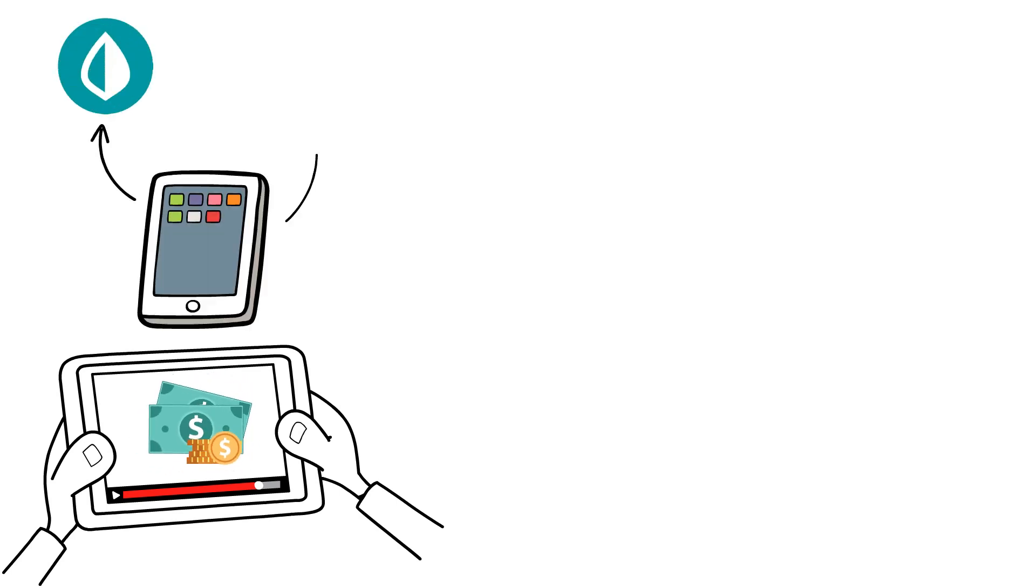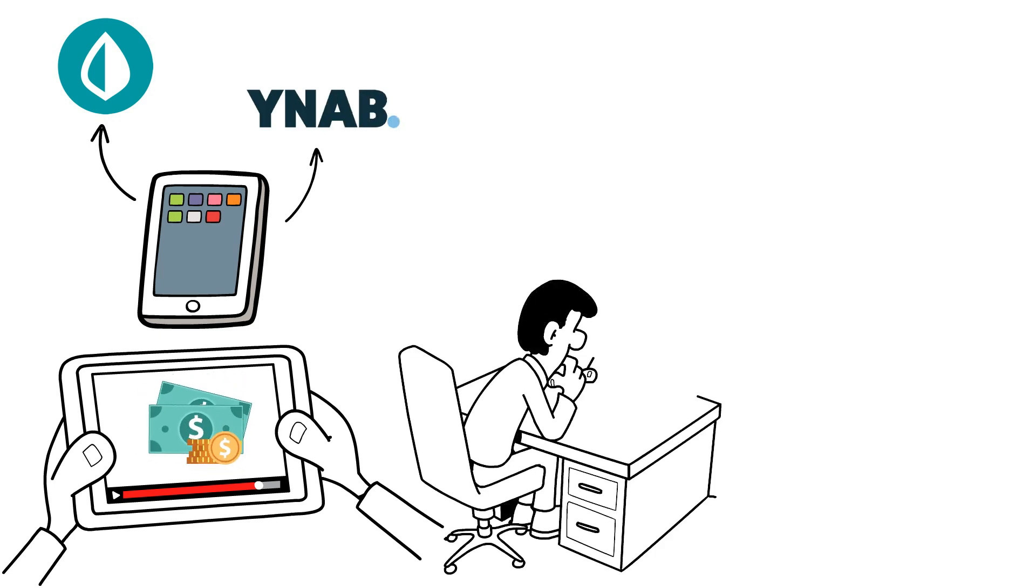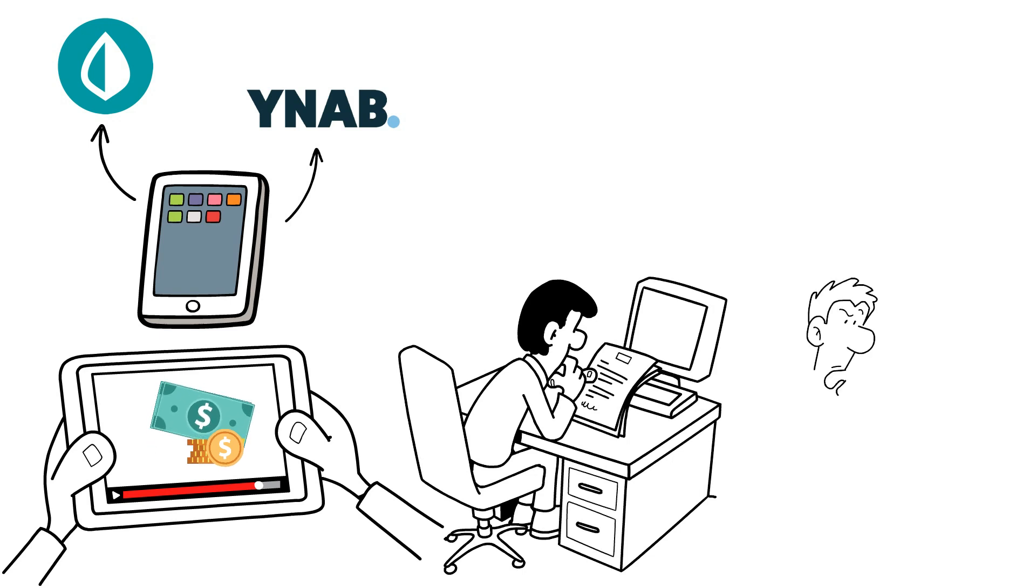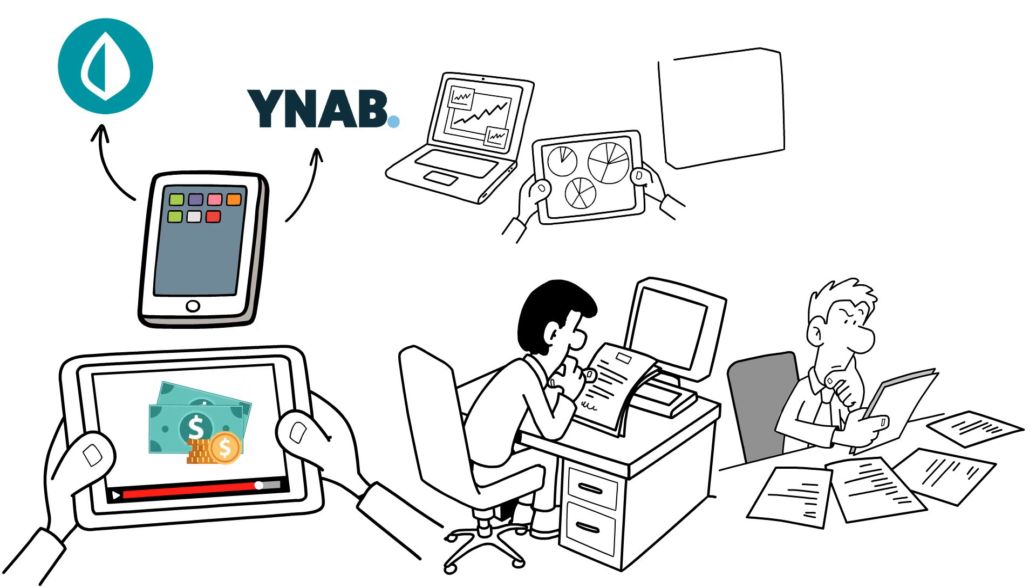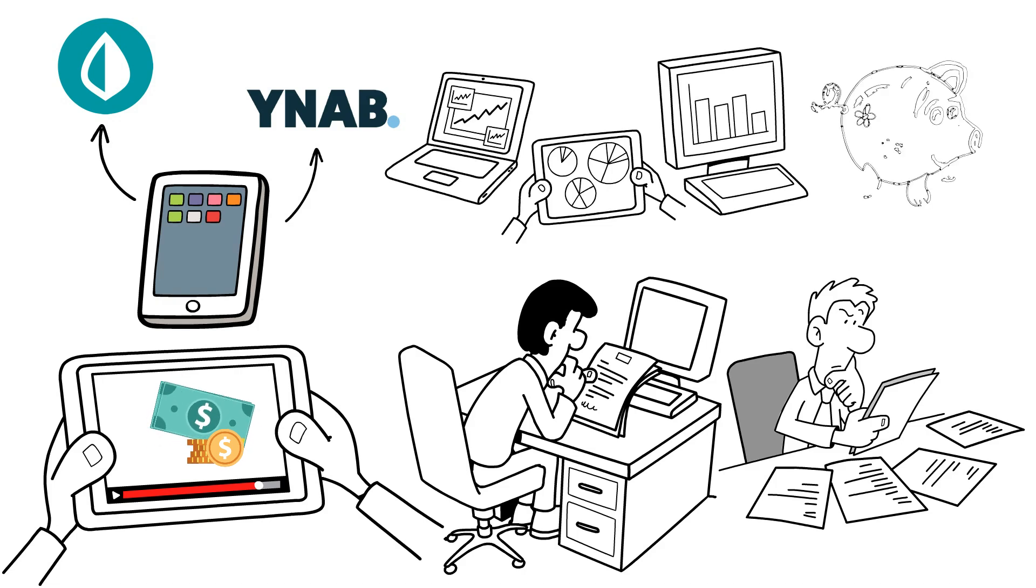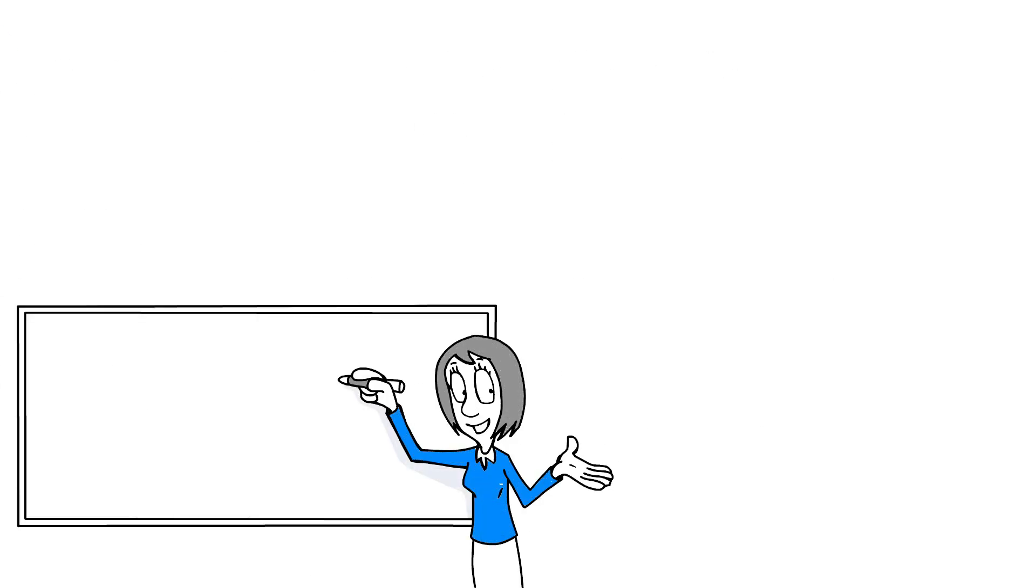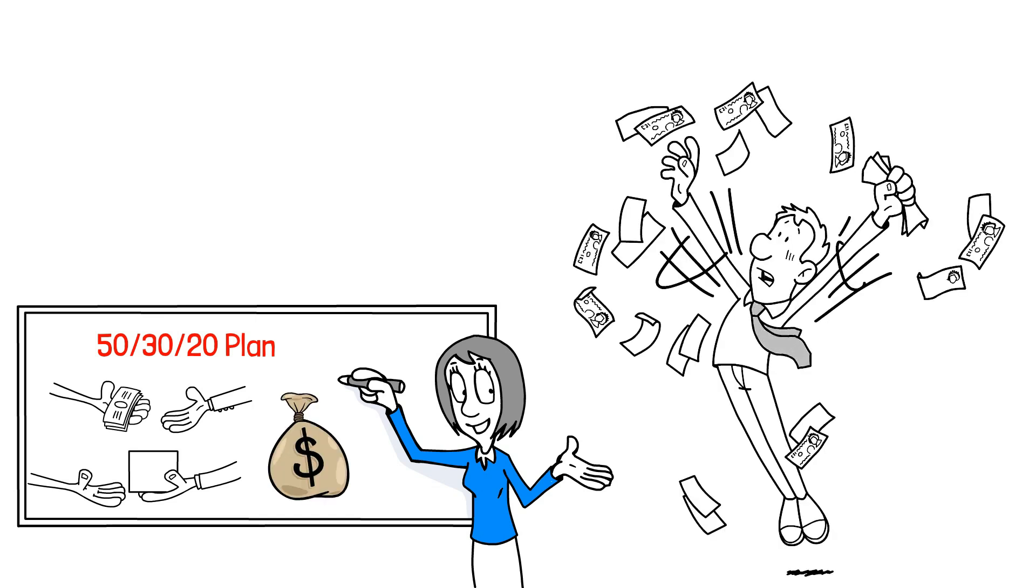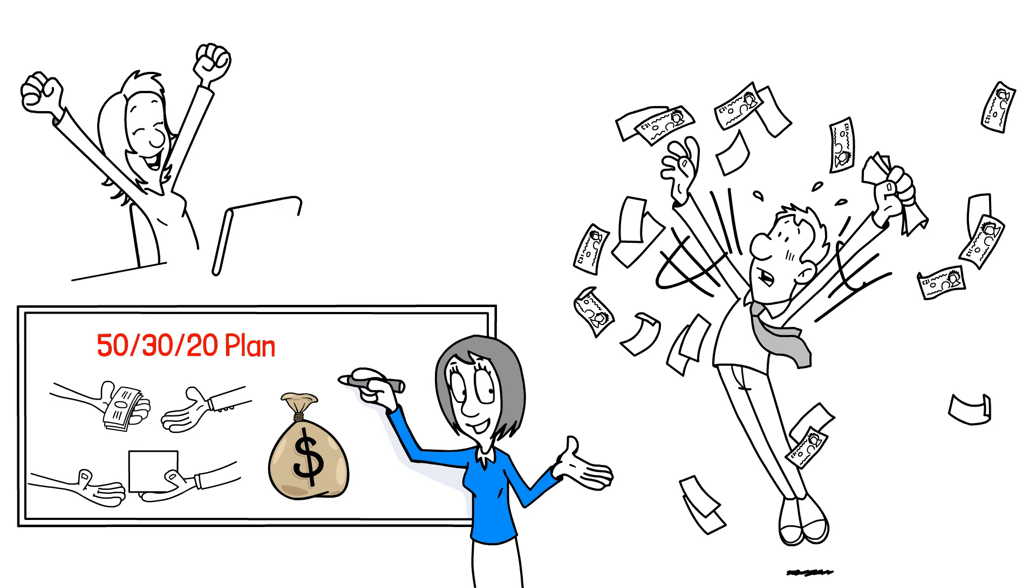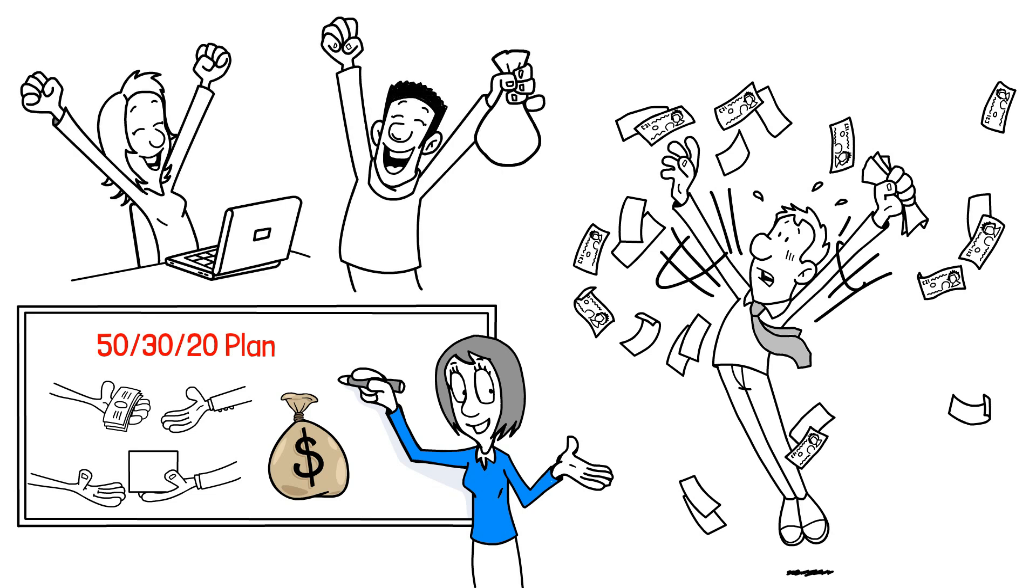We'll teach you how to use apps like Mint and You Need a Budget, or simply create a spreadsheet to track your income, expenses, and savings. Analyzing your budget will allow you to make better financial decisions, such as prioritizing fixed costs like rent and utilities, reducing variable expenses like takeout and shopping, and increasing your savings. We'll also introduce you to the 50-30-20 plan, which is a simple yet effective way to ensure that your spending aligns with your financial goals. So if you want to stop being lost at sea with your money and start building a better financial future, join us and learn how to master your money through budgeting.